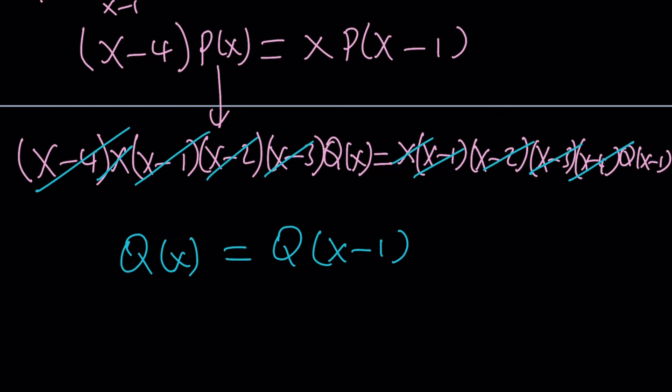We said that Q of X is a polynomial. So, it is linear, quadratic. What kind of polynomial is it? Well, think about it. If you replace X with X minus 1, nothing changes. So, if you replace X with X minus 1 again, you're going to get Q of X equals Q of X minus 2.